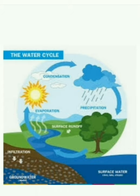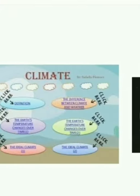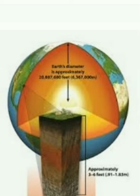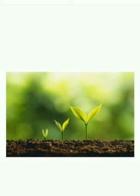Life on earth has become possible because of the suitable distance between the sun and the earth. Because of that ideal climate, the distance between earth and sun helps to support life on earth. Earth has ideal climate and varieties of soils which supply food and water to the plants.